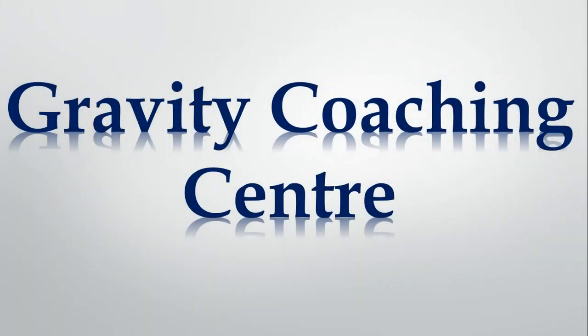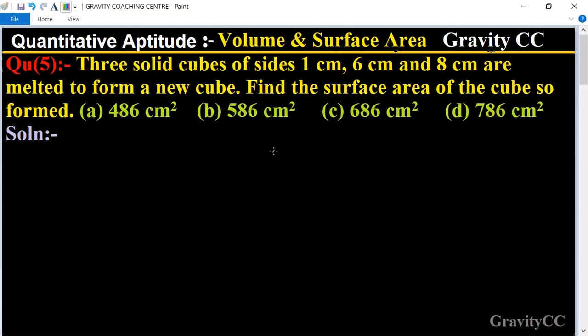Welcome to our channel, Gravity Coaching Center. Quantitative Aptitude, chapter Volume and Surface Area, question number five. Three solid cubes of sides 1 cm, 6 cm, and 8 cm are melted to form a new cube. Find the surface area of the cube so formed.